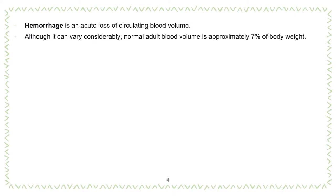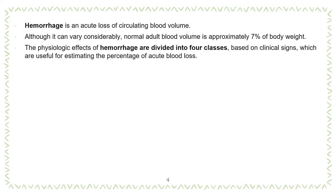Hemorrhage can vary considerably. Normal adult blood volume is approximately 7% of body weight. The physiologic effects of hemorrhage are divided into four classes based on clinical signs, which are useful for estimating the percentage of acute blood loss.